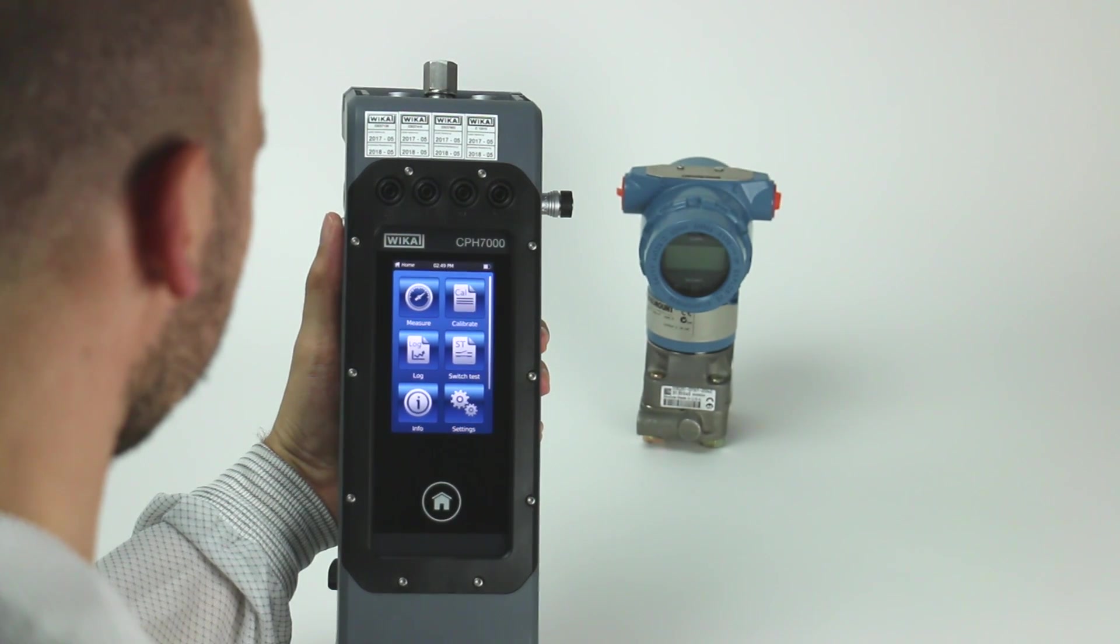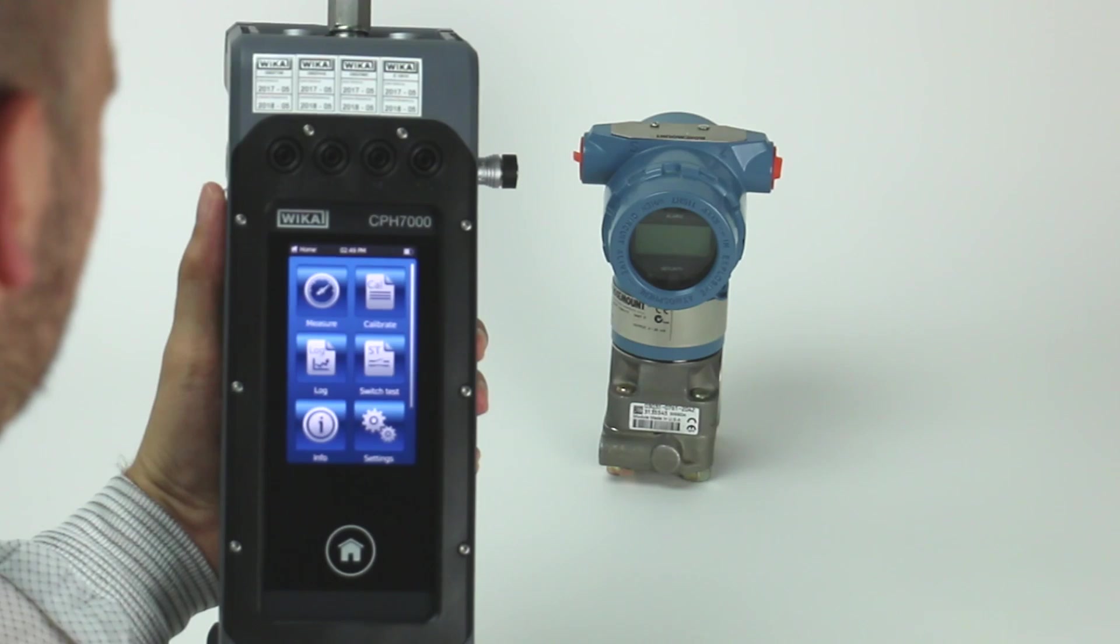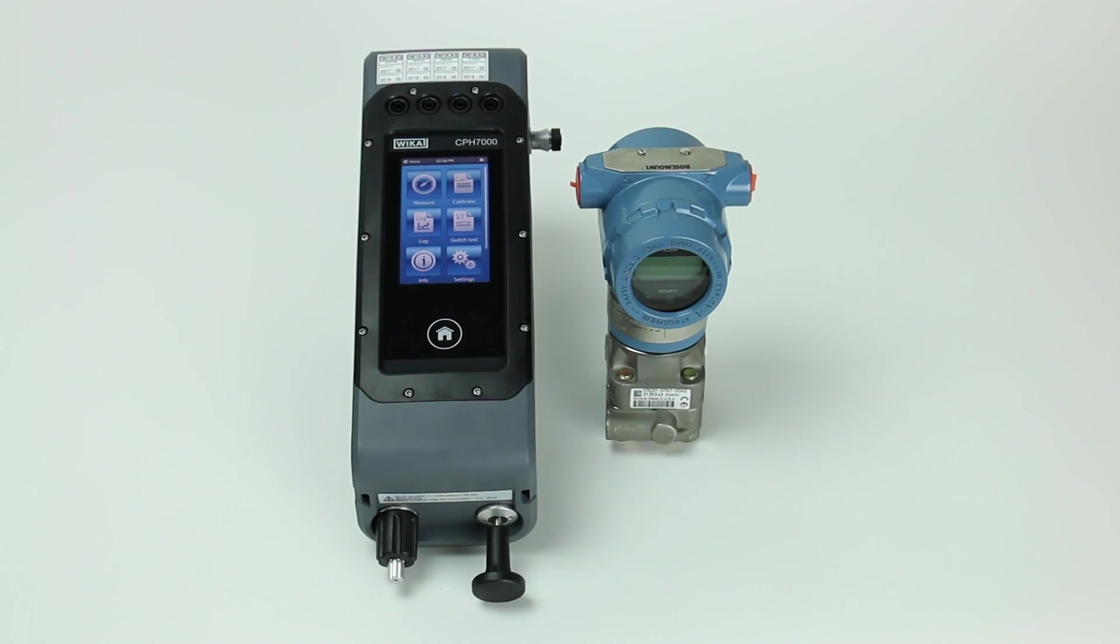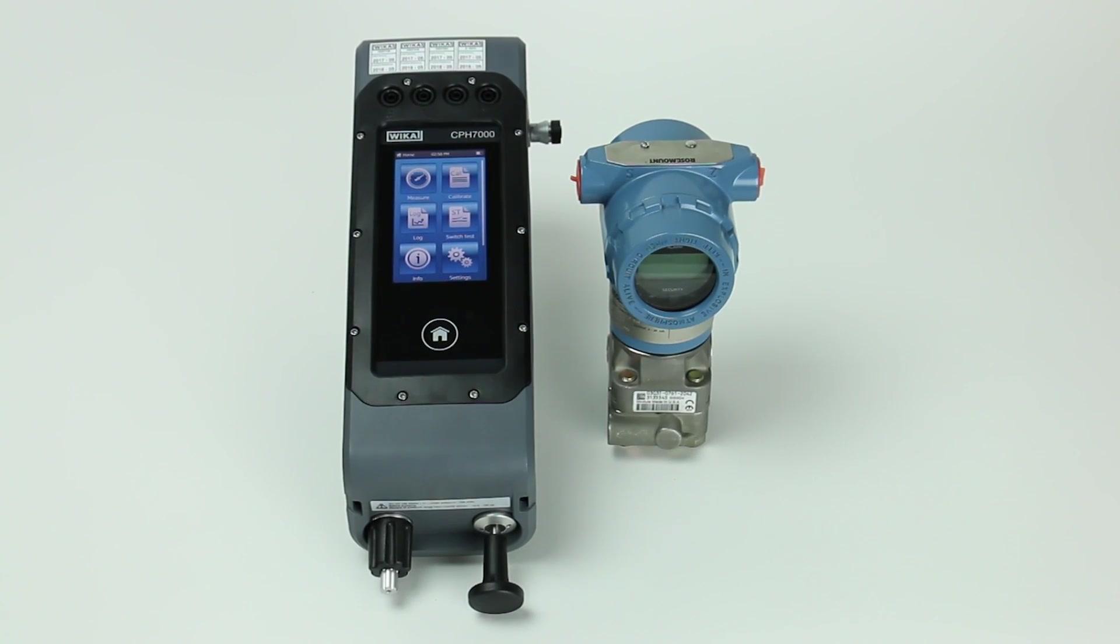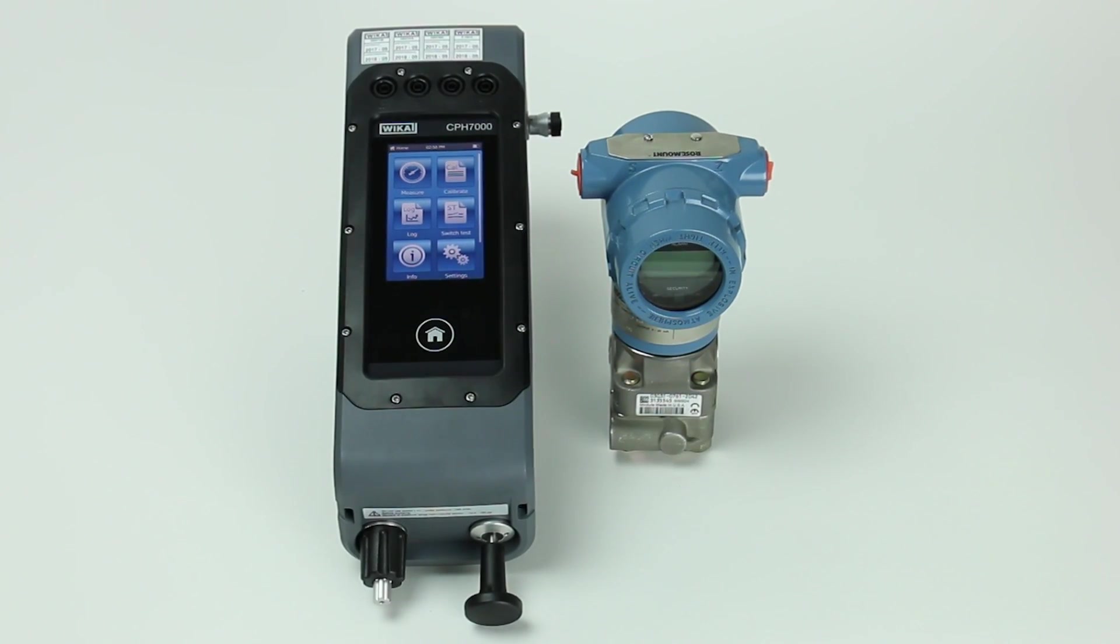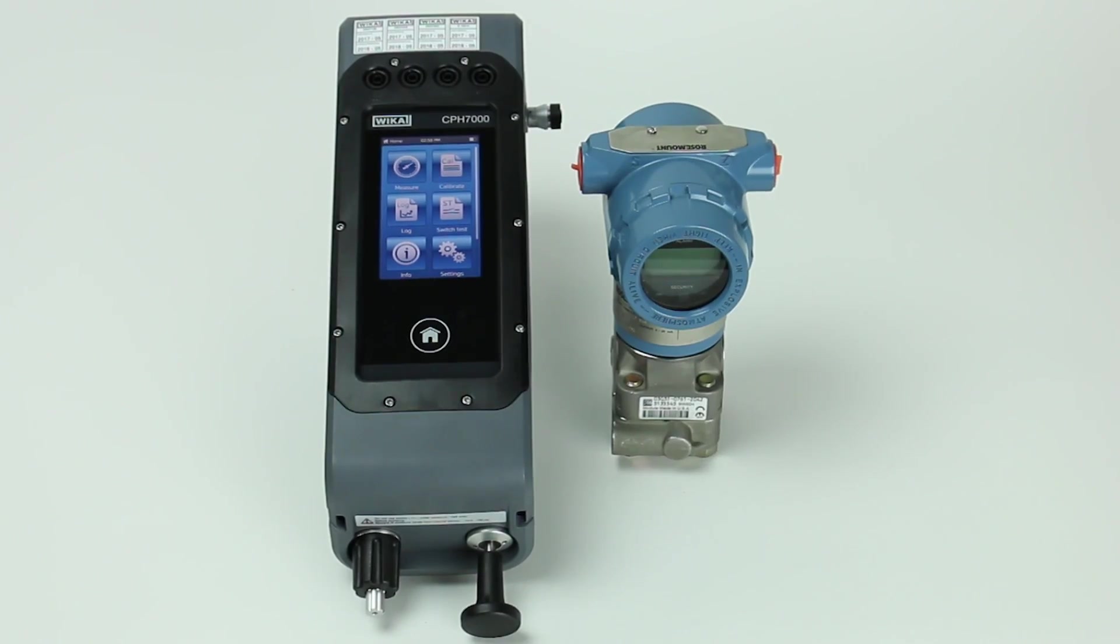The calibration and span adjustment of a pressure transmitter with a 4 to 20 milliamp output will be covered in this video. We'll use a WICA CPH-7000 portable process calibrator and a Rosemont 3051 pressure transmitter.